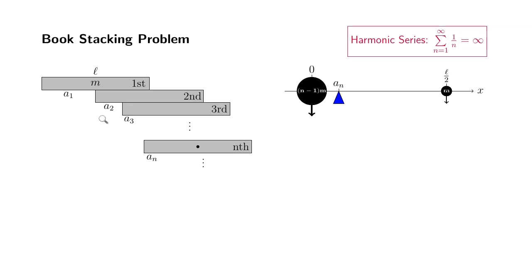So to determine the second overhang, A2, what we need to do is we need to find the center of mass of the first two books and then place it at the edge of the third book. So we keep on doing this. So to determine the general formula for AN, we're trying to find the center of mass of the first n books.